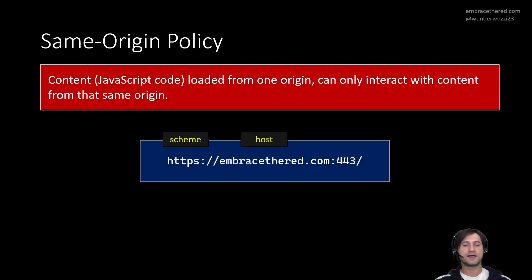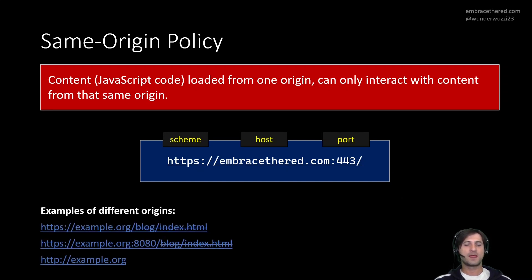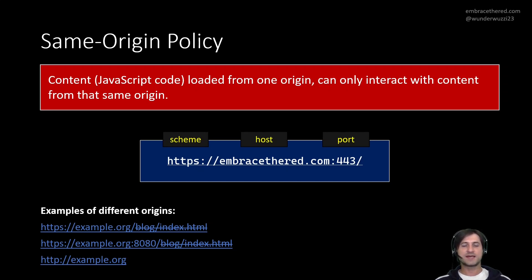What is an origin? An origin consists of three parts: the protocol or scheme — in this case HTTPS — then the hostname, in this case embracetheread, and then the port. Those three pieces together make up the origin. For example, example.org, example.org on port 8080, and http://example.org are all different origins. The later part of the URL is not relevant when determining the origin. The Same Origin Policy says that JavaScript loaded from example.org cannot access HTML from example.org on port 8080.